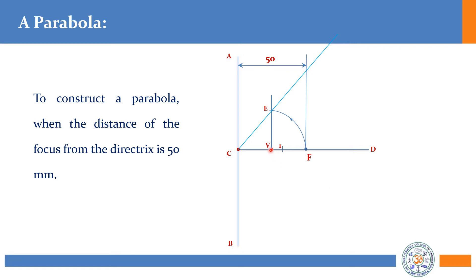From the vertex, take any distance along the axis line — for example, 10 mm or 9 mm — and mark a few points. No need to mark many; 7 or 8 lines will do, maximum 8 lines. Through point 1, draw the vertical line — that line should meet the guideline.